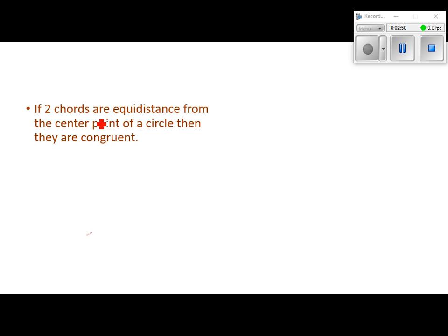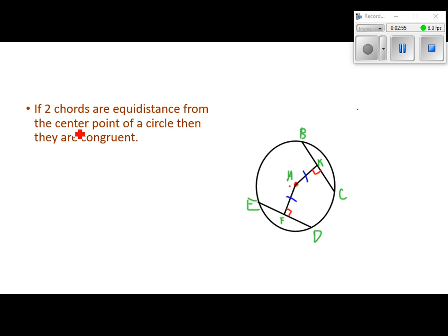If two chords are equidistant from the center point of a circle, then they have to be congruent. The distance has to be given by a right angle — they have to be perpendicular. So if those two distances are congruent — both five inches or whatever — then these two chords have to be congruent. And going back to the previous theorem, we know the perpendicular bisects each chord, so all four half-chord parts are equal. We could draw in right triangles, and those triangles would be congruent.